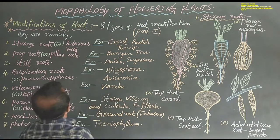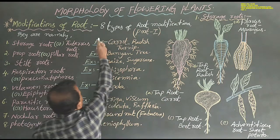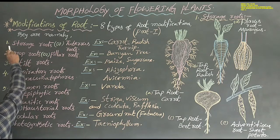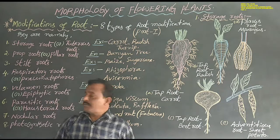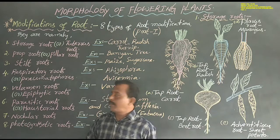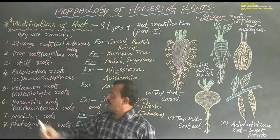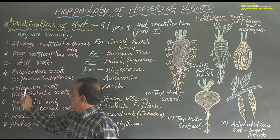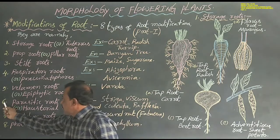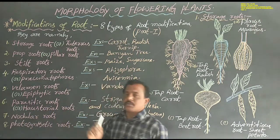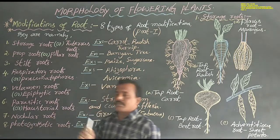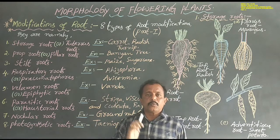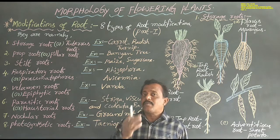How many types of root modifications are there? There are 8 types of root modifications. They are namely: first, storage roots or tuberous roots; second, prop roots or pillar roots; third, stilt roots; fourth, respiratory roots or pneumatophores; fifth, velamen roots or epiphytic roots; sixth, parasitic roots or haustorial roots; seventh, nodular roots; eighth, photosynthetic roots.